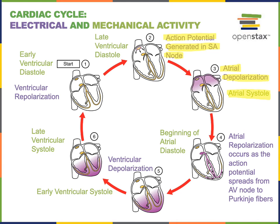Then the electrical signal — the action potential — spreads from the atria through the intrinsic conduction system: from the AV node through the AV bundle and bundle branches into the Purkinje fibers that branch throughout the myocardium of the ventricles. Following atrial depolarization, the atria enter repolarization as the action potential spreads from the AV node through the Purkinje fibers and causes ventricular depolarization. Ventricular depolarization is the stimulus that activates ventricular systole.